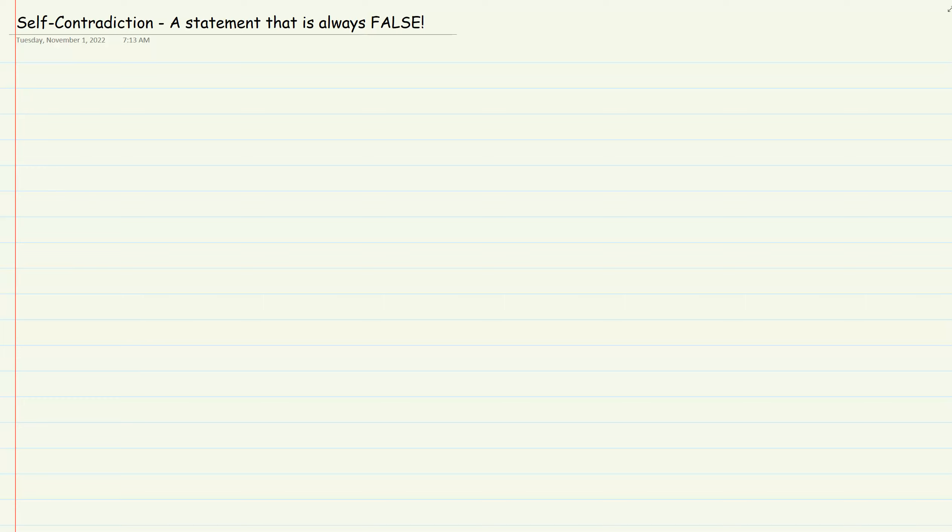Suppose you have this statement: P and Q, and not P or not Q. Here is our statement and the question is, is it going to be a self-contradiction, a tautology, or neither?